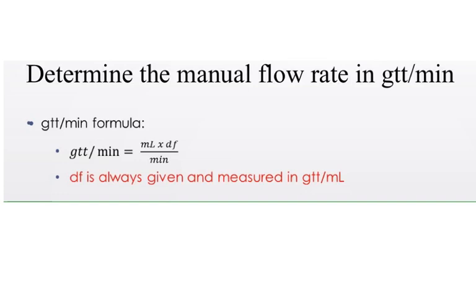One other thing to always know, GTT per minute is always a whole number. You will round. We will not tell you to, but you will have to round to a whole number. The reason is because you're calculating drops per minute. You can't give part of a drop. It's either a drop or it's not, so you cannot give part of a drop.